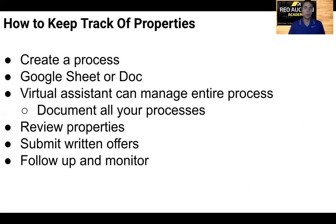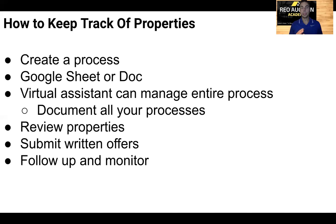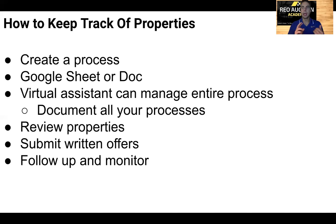Next, you have to set up processes and systems to keep track of all these properties. First, learn it yourself — you get the daily email, then what do you do? We use Google Sheets or Google Docs to manage this process. You could use Excel files or Word Docs as well; you don't have to use Google. If you're sharing with a team, Google Drive is pretty easy. We capture the MLS listing, list price, the address, the agent's name and email, and how many bedrooms and bathrooms there are.